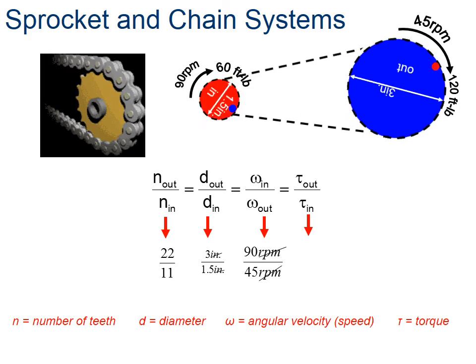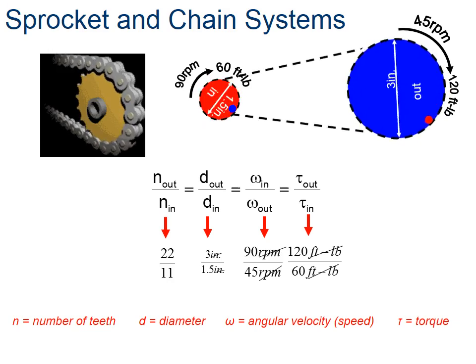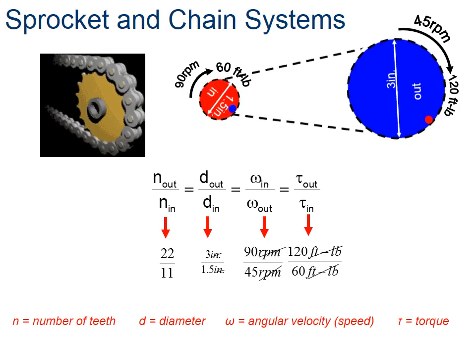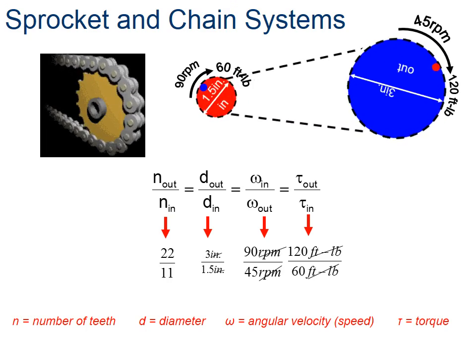And when you plug in the given numbers here, you can see that they are all equal. Big difference between a sprocket and chain system and gears is that sprockets, while they have teeth, they don't mesh. They're apart, and they engage the links of the chain, and that's how they transfer their torque and rotation.